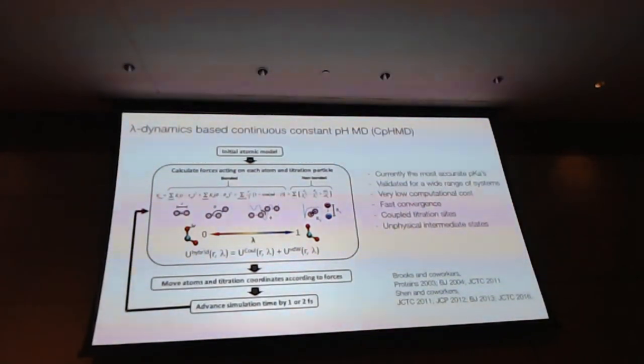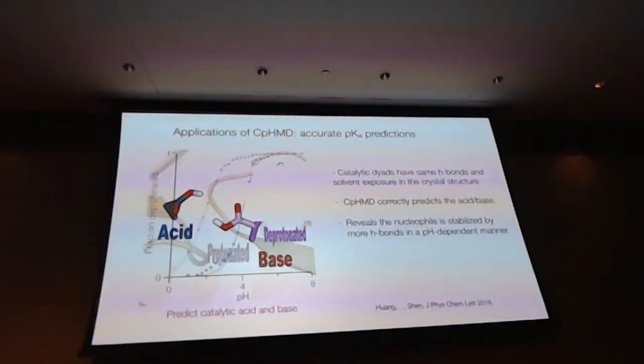And moreover, the convergence is very fast. We can deal with multiple titratable sites titrating at the same time in a similar pH range. We have no problem of converging them. And the only drawback currently that I can see is we do have unphysical intermediate states. So what it means that in order to facilitate the transition between the protonated and deprotonated states, we have to go through the intermediate lambda values. And those intermediate lambda values correspond to unphysical states. But there are ways to suppress them. So currently, we're using a simple harmonic potential to suppress the population of those intermediate states. And normally, we keep them under 20% in our simulations. And nonetheless, we need them in order to facilitate the transition.